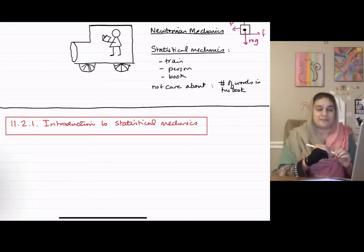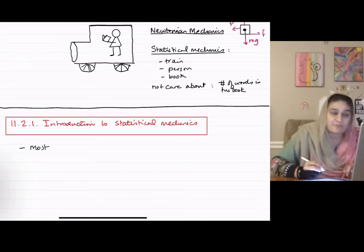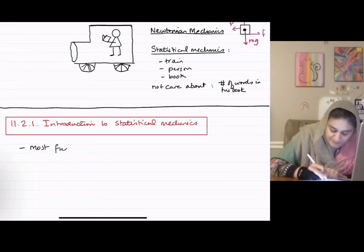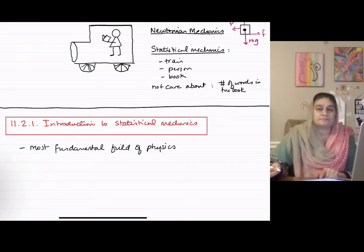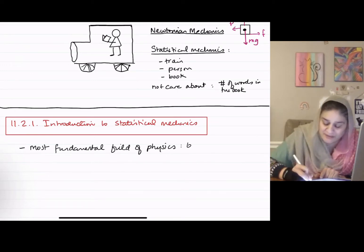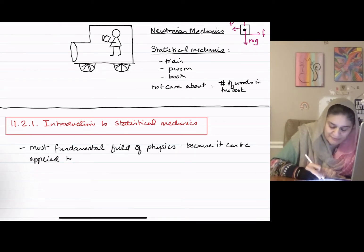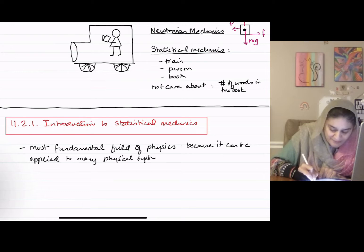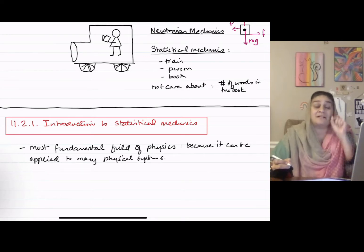So when we talk about statistical mechanics, some people call statistical mechanics as the most fundamental field of physics. Why do they do that? They do that because it can be applied to many physical systems, almost all of them, because it provides us the techniques we can use.